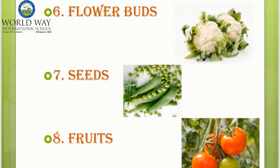Flower buds: cauliflower and gourd are flower buds. The white part of the cauliflower is a vegetable while it is surrounded by leaves. Seeds: broad beans and peas are seeds that grow in pods above the ground.